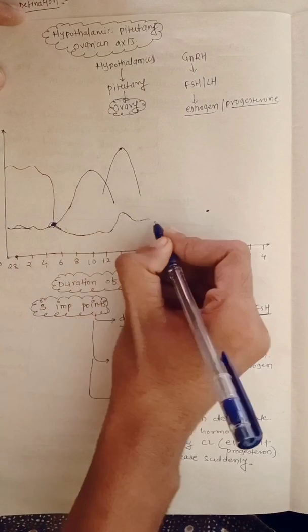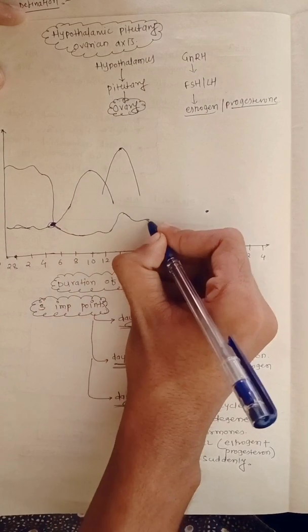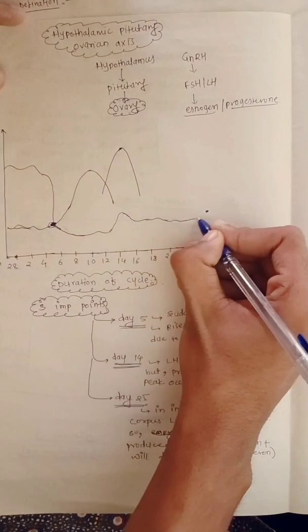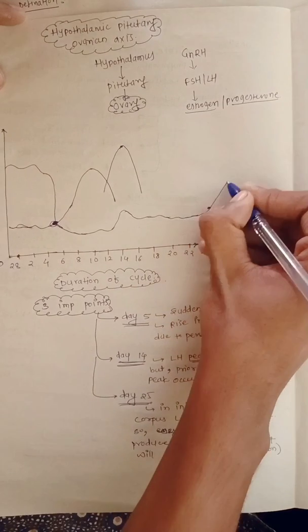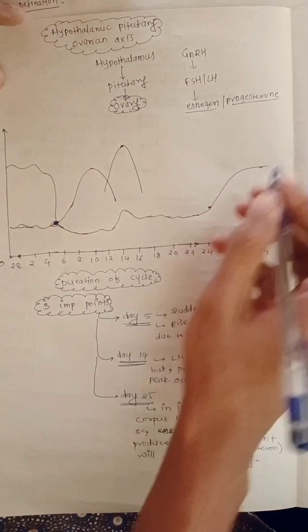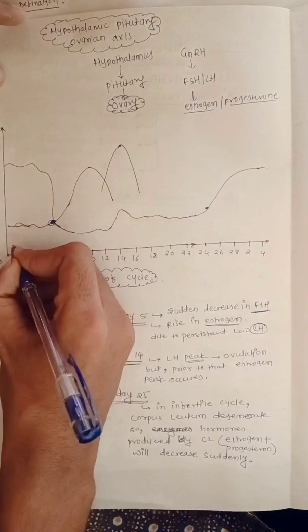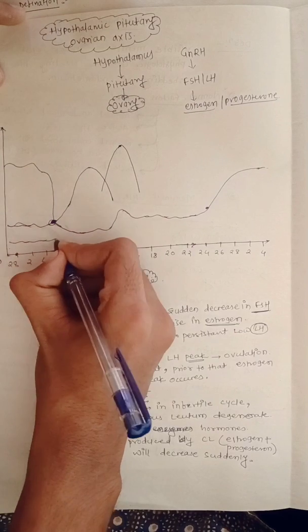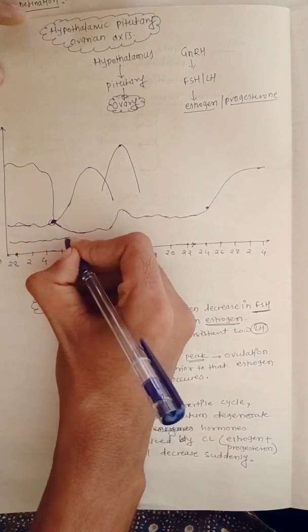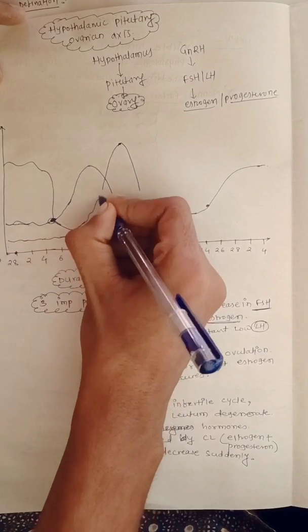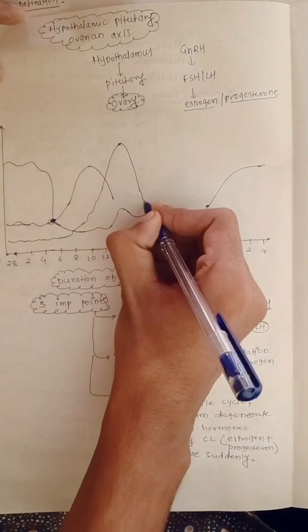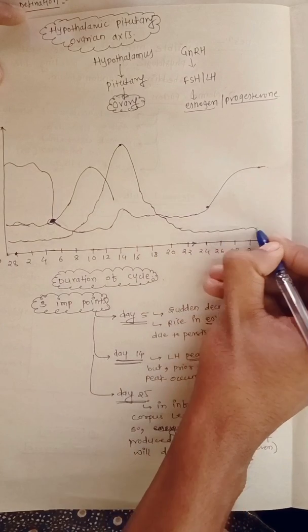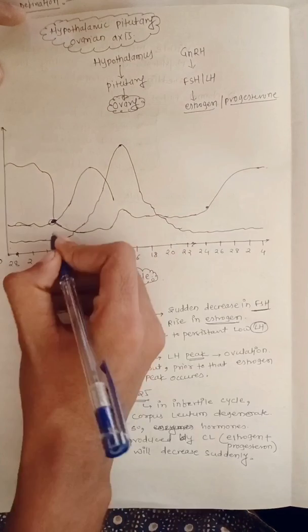FSH will again have a small peak during day fourteen, and after that it will plateau. On day twenty-five, due to degeneration of the corpus luteum, estrogen will decrease, and due to this estrogen decrease there is a subsequent FSH rise.